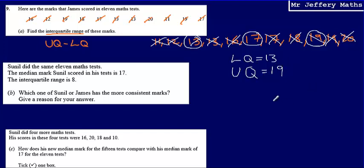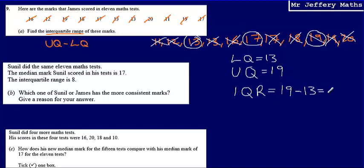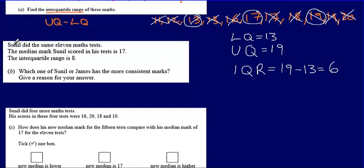My upper quartile is 19, my lower quartile is 13, and so my interquartile range — which I'll call IQR — is going to be 19 minus 13, which gives me an answer of 6. So that's part A: interquartile range is 6.